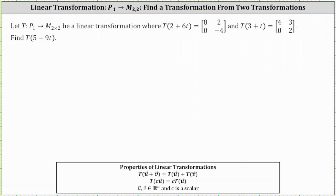Let the transformation from P1 to M22 be a linear transformation where T of 2 plus 6T equals the matrix [8, 2, 0, -4], and T of 3 plus T equals the matrix [4, 3, 0, 2]. We're asked to find the transformation of 5 minus 9T.